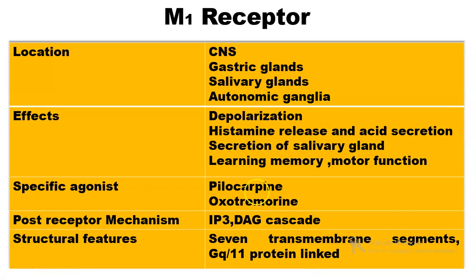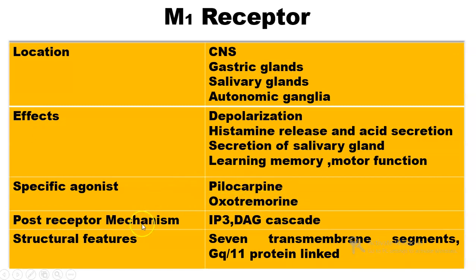Now let us study the different types of muscarinic receptors in detail. The first is M1 receptors, located mainly in the CNS, gastric glands, salivary glands, and the autonomic ganglia. The effects of M1 receptors include depolarization, histamine release and acid secretion, secretion of salivary glands, and learning, memory, and motor function. The specific agonists of M1 receptors are pilocarpine and oxotremorine. The post-receptor mechanism involves the IP3 and DAG cascade. The structural features include 7 transmembrane segments and a Gq protein link.